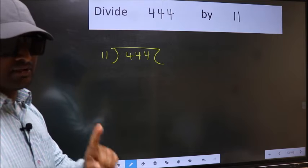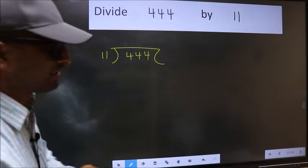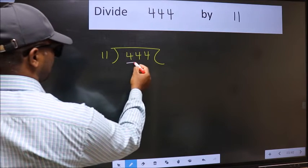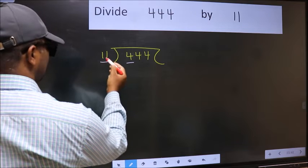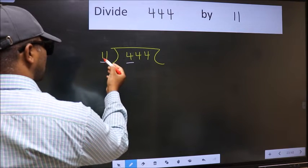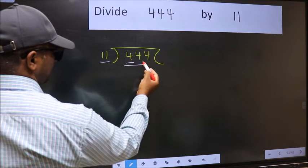This is your step one. Next, here we have 4 and here 11. 4 is smaller than 11, so take two numbers.